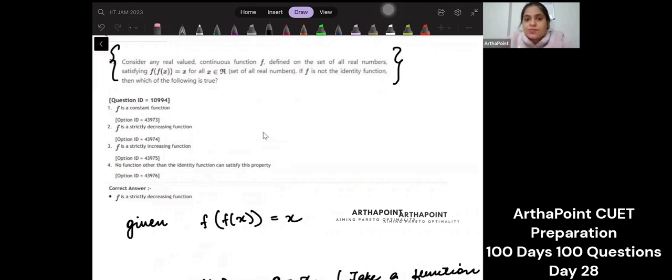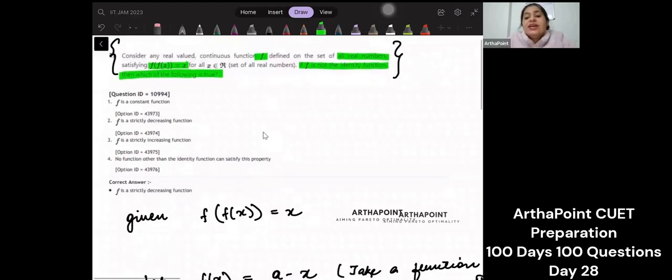See, a lot of times when they give you a particular kind of case, just for example, here they are saying consider any real valued function f defined on the set of all real numbers where f of f of x is x. If f is not identity function, which of the following is true? Now in these cases, you have to go ahead and assume some value of the function. If you don't assume some function, it will become very difficult for you to solve.